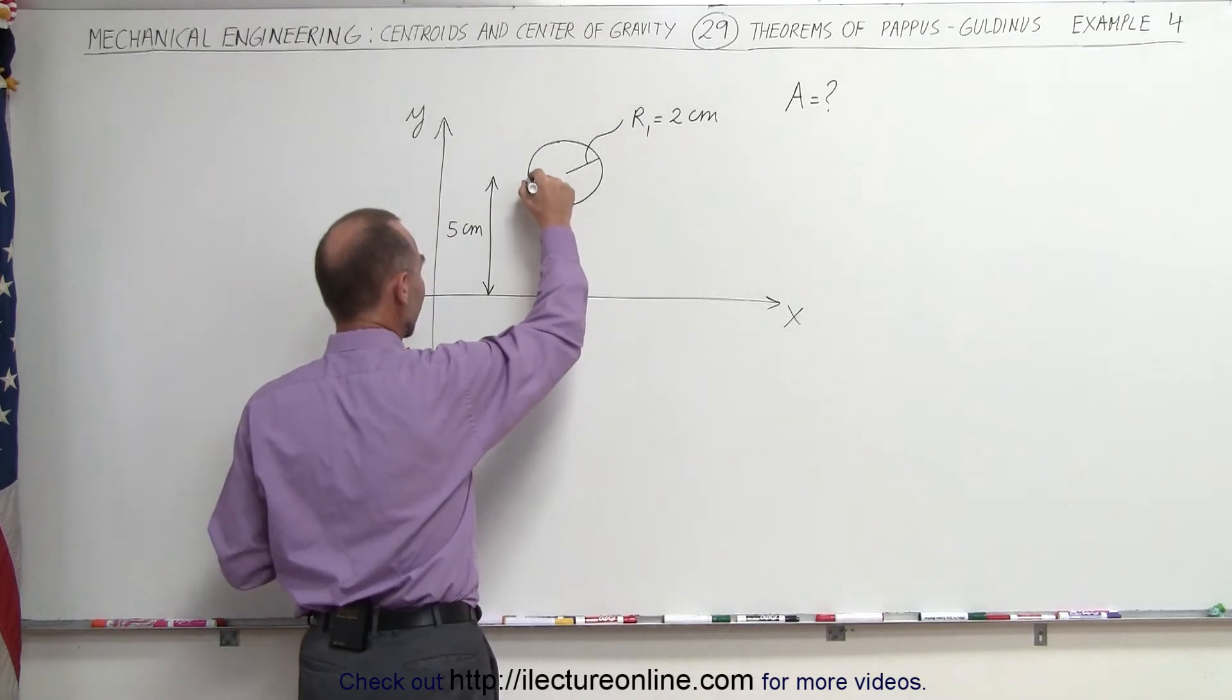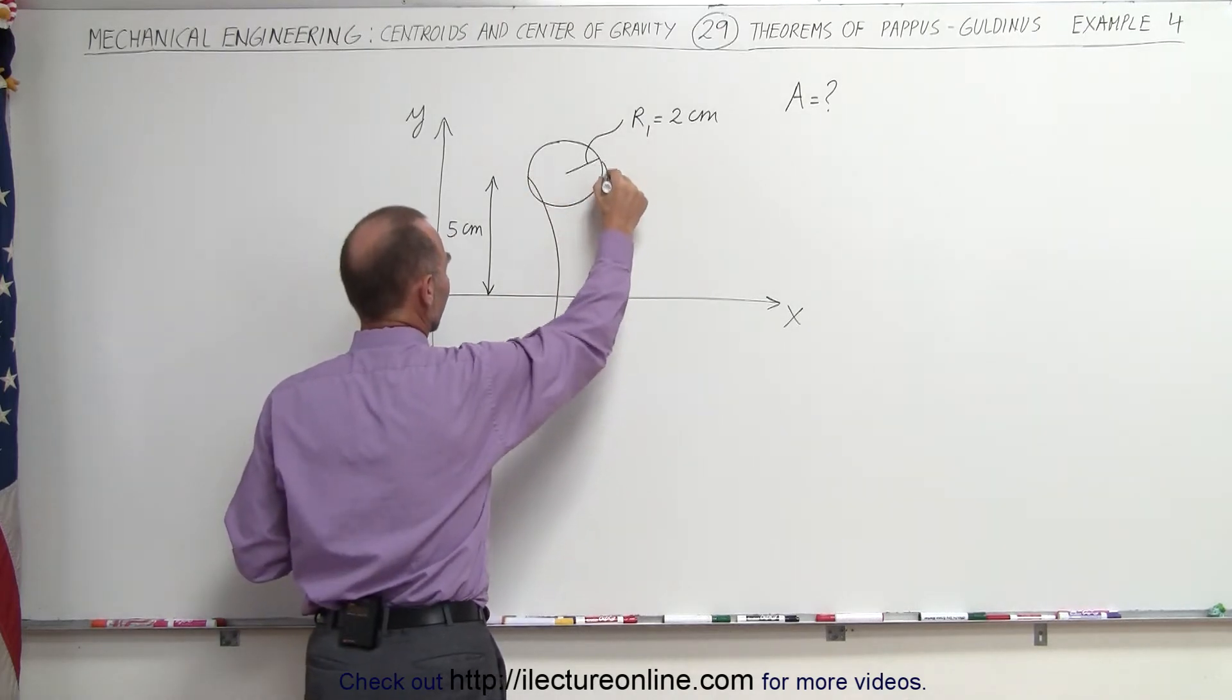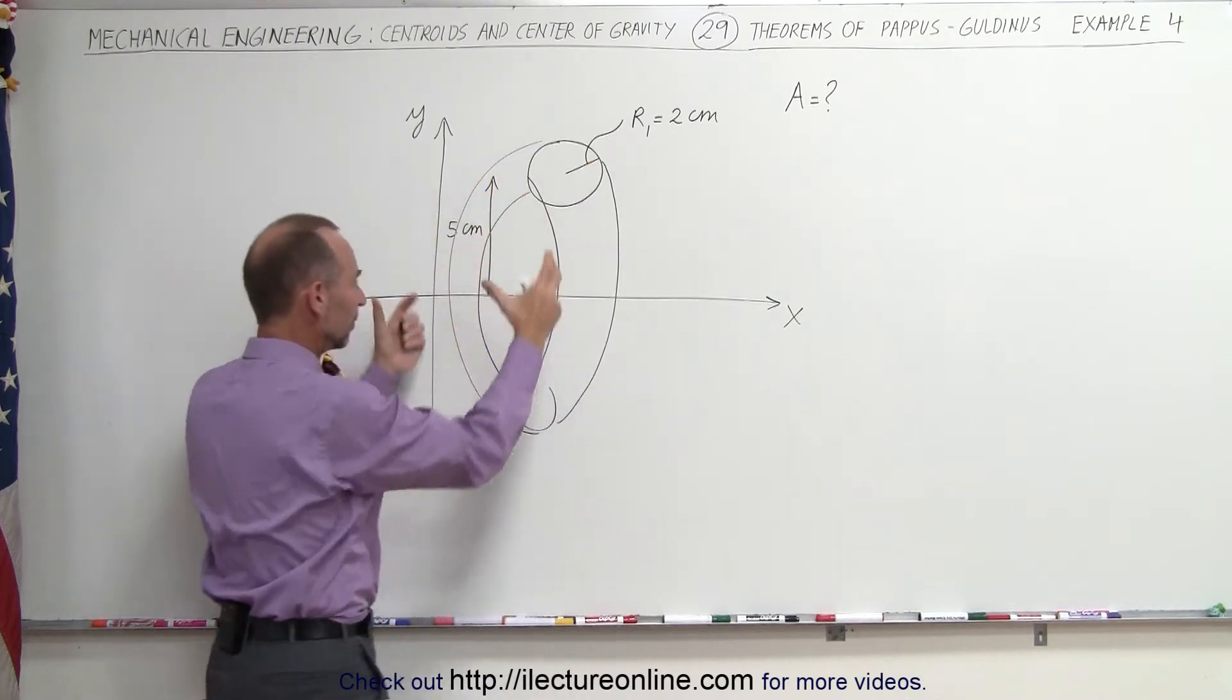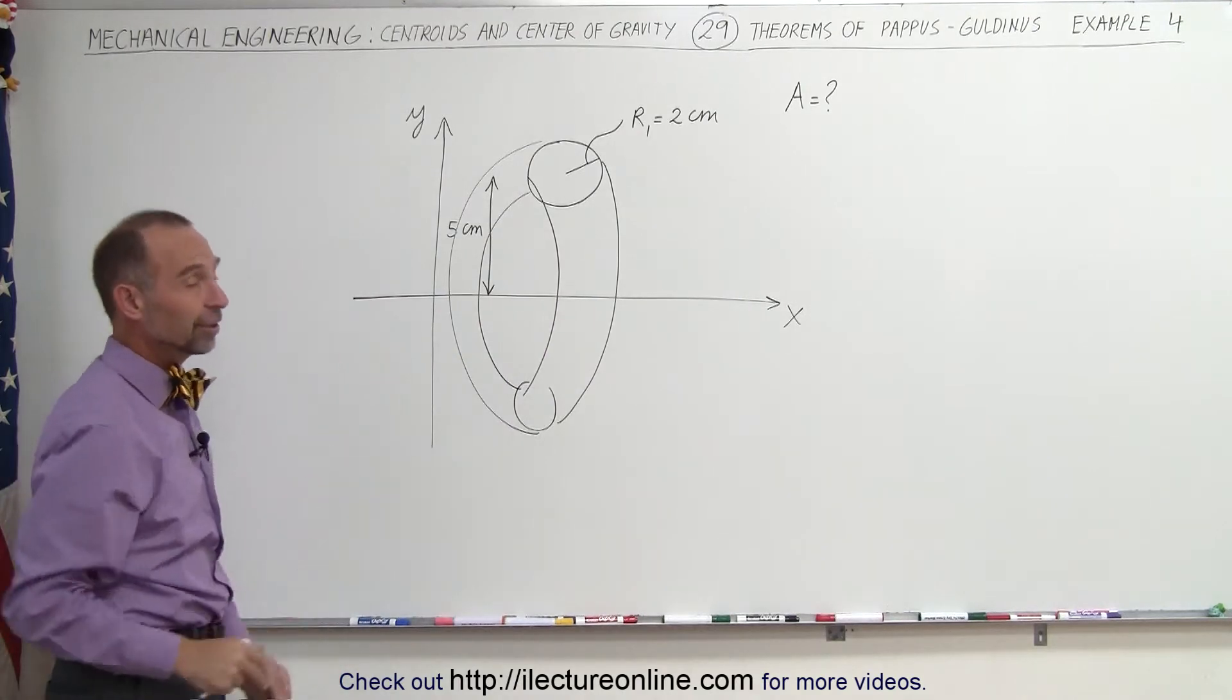We're going to rotate it about the x-axis. So it looks like this. We have a donut here, and then we come back in the other direction. So it kind of looks like a donut. We need to find the surface area.